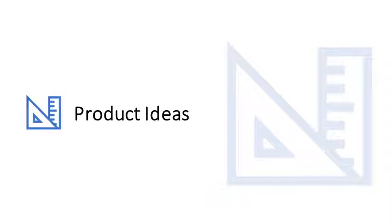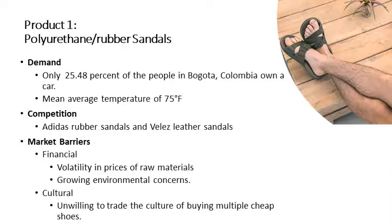Now for the big stuff — product ideas. We will now showcase a few product ideas for production and sale in Colombia. Product number one: the polyurethane rubber sandals. In Colombia, as well as many other South American countries, it is common to wear sandals around the home and when walking to and from destinations, because of the lack of personal vehicles. Since walking and buses are the main types of travel, a comfortable sandal would benefit the health of many in a country where the streets are sometimes unpaved, uneven, and very hard on shoes.